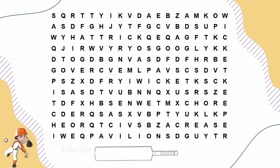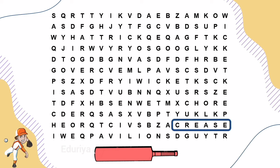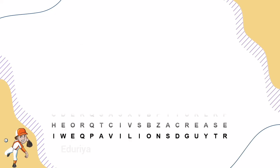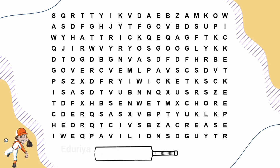The line through the centres of the three stumps at each end is known as Crease. Bail is one of the two smaller sticks placed on top of the three stumps to form a wicket. This is known as Bail.